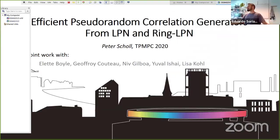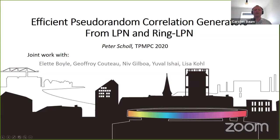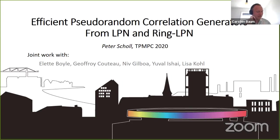Peter is ready to give his talk as an invited speaker. There's not much reason to introduce Peter, who is an assistant professor at Aarhus, but just to say that basically everything in the past six or seven years that was about efficient secure computation — there was a good chance that Chao was in the paper, unless Peter was in that paper. Peter has had fantastic work making secure computation faster: MPC over rings, and in particular, recent work on preprocessing for MPC, which is also what Peter's talk today will be about.